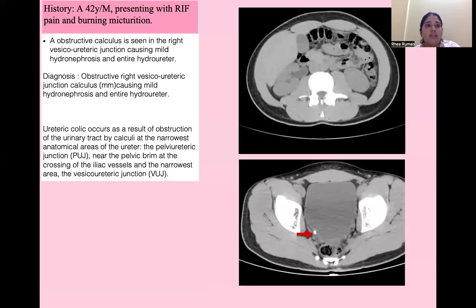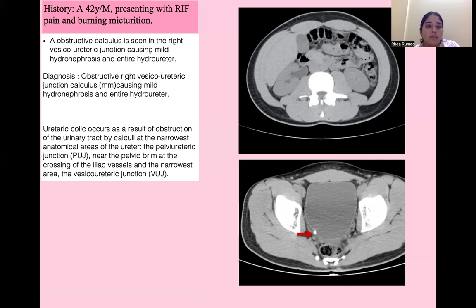Next is a case of a 42-year-old male presenting with right iliac fossa pain and burning micturition. An obstructive calculus is seen in the right vesicoureteric junction causing mild hydronephrosis and ureteral dilatation. Ureteric colic usually occurs as a result of obstruction of the urinary tract by calculi at the narrowest anatomical areas of the ureter.